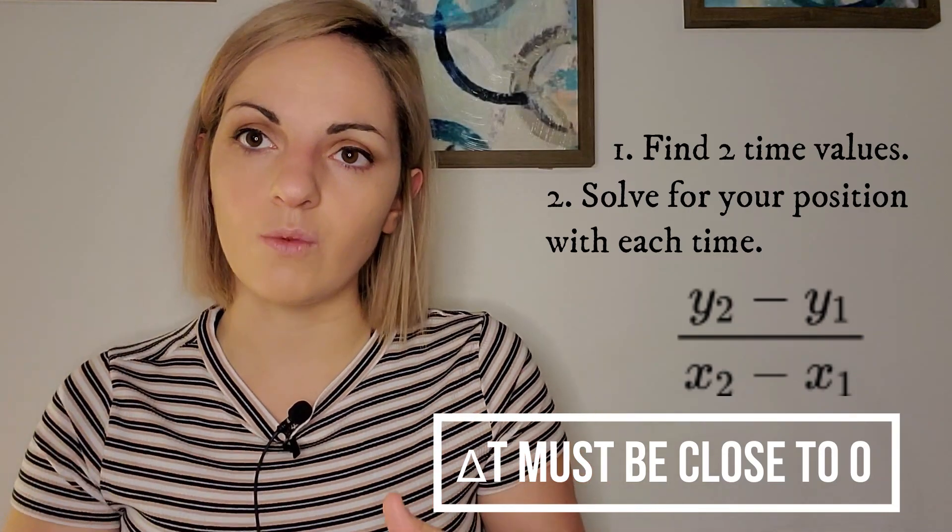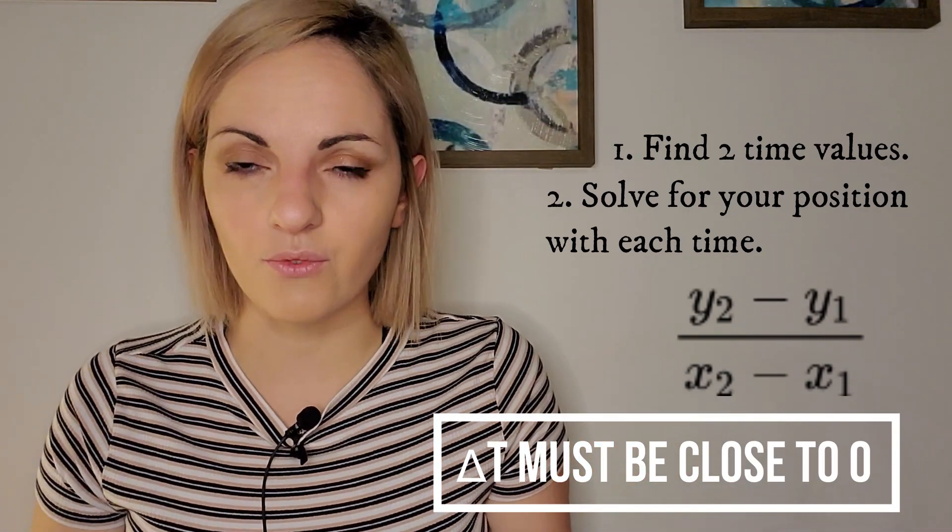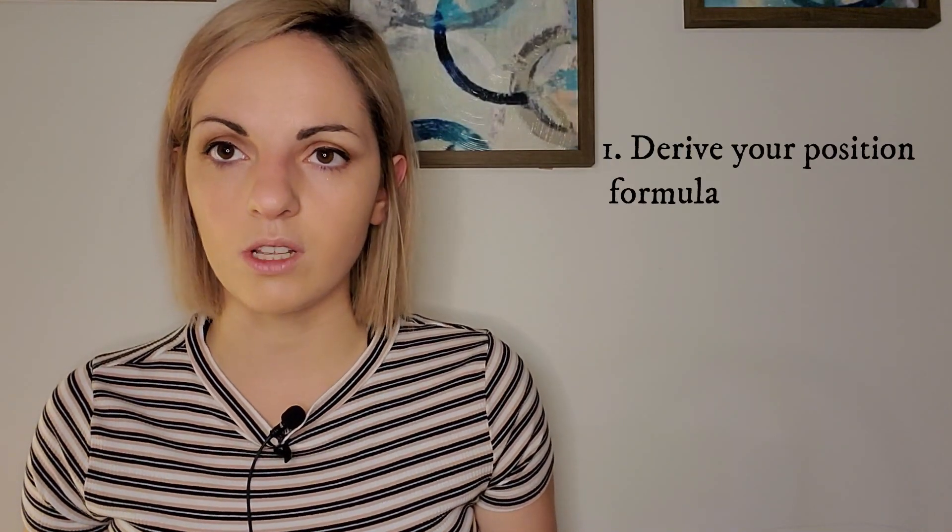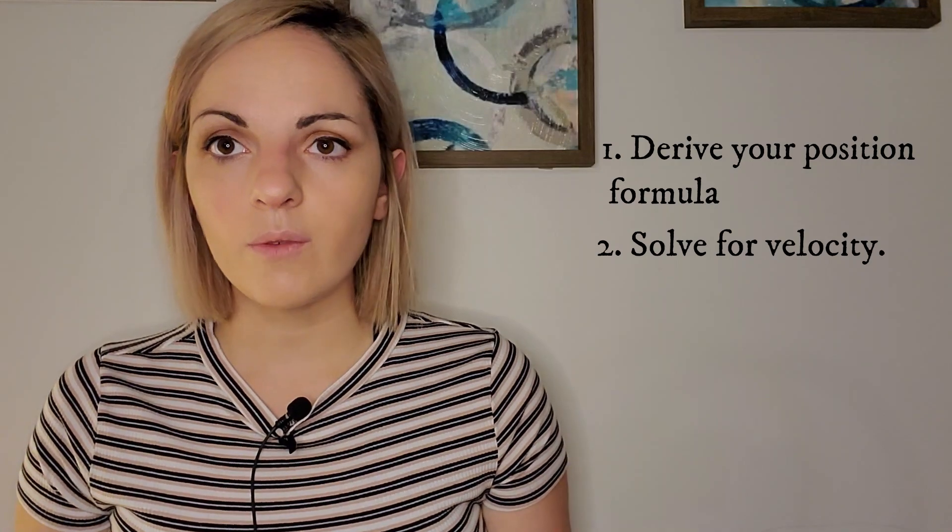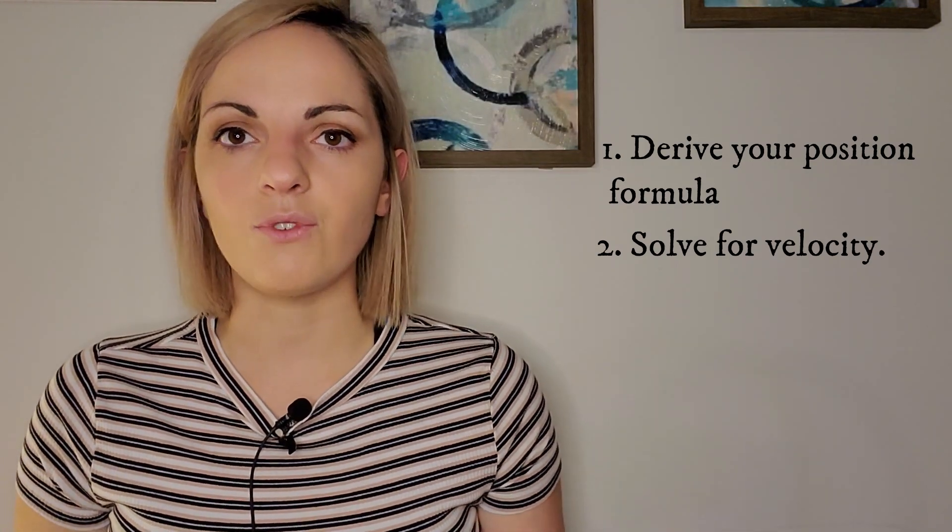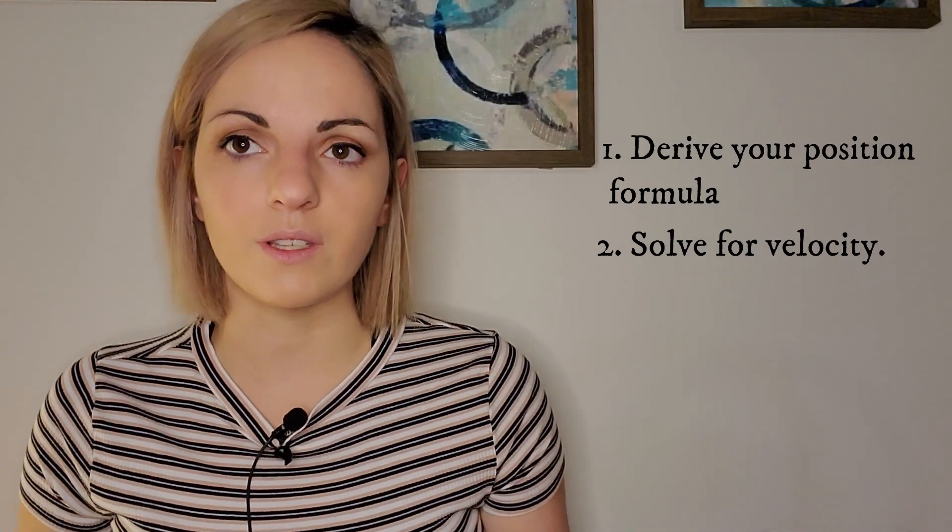So your average velocity, which is what you technically are finding here, it's almost your instantaneous velocity, an approximation of that. Then your second method, it will actually give you your instantaneous velocity. You derive your formula, and then you solve for that. So I will only recommend you to do the first method if you want to double check that your derivative formula was okay, your solution is correct, whatever. If you have any questions please just let me know.